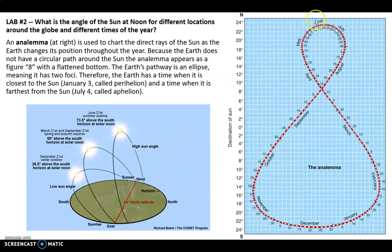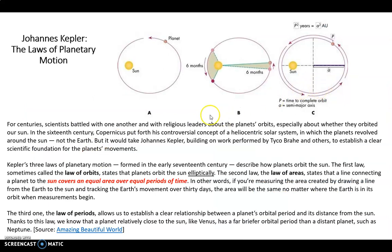I wanted to show you real quick, if you had the question of why is it this funky snowman number eight look to it? It has to do with the laws of planetary motion, specifically the second one, the law of areas, and that the sun covers an equal area over equal periods of time.